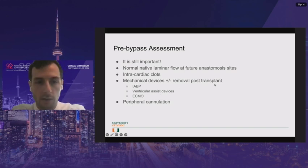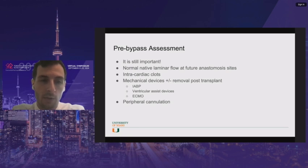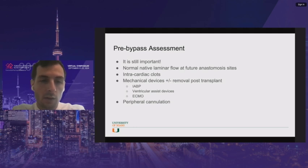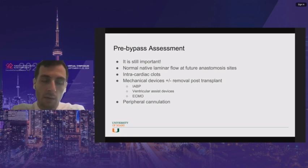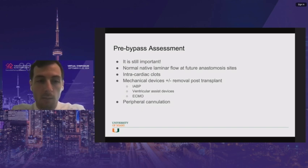There are often mechanical devices involved. Make sure the balloon pump is still in the right place, check for aortic dissection flaps, and look for any cannulation issues with ECMO. If they're on peripheral ECMO before or after, knowing about a tortuous aorta or significant aortic plaques might lead you to decide they need to stay on central ECMO instead of attempting peripheral cannulation.